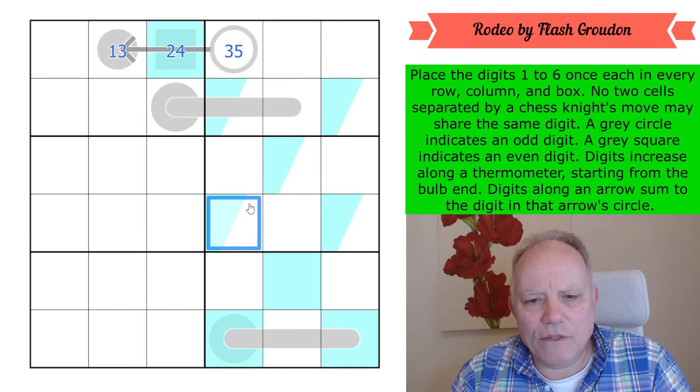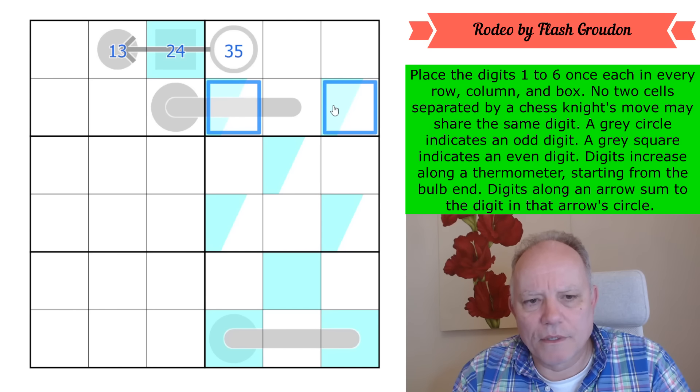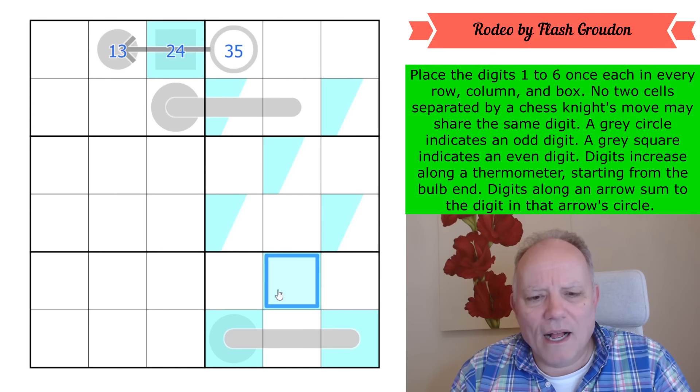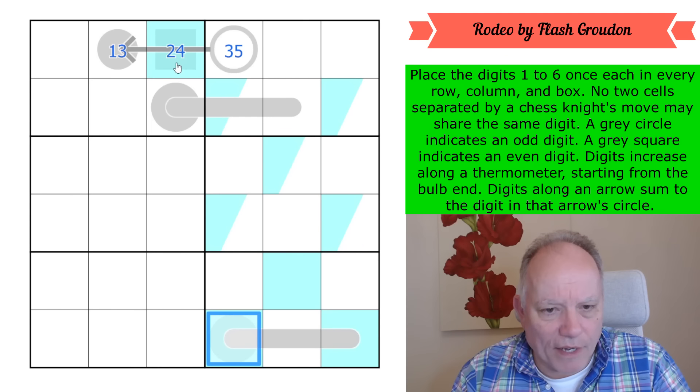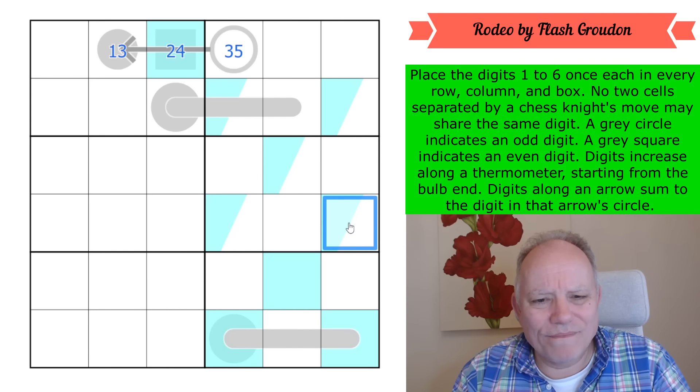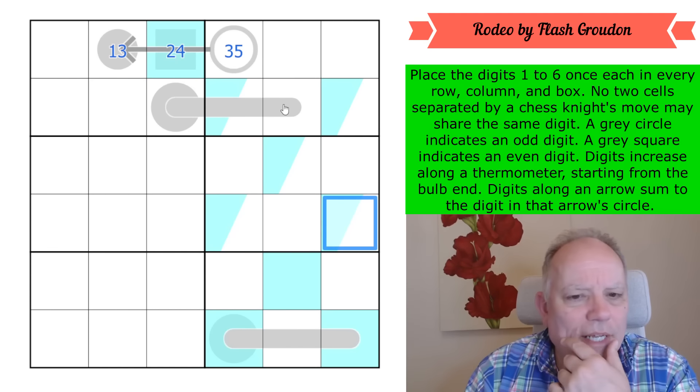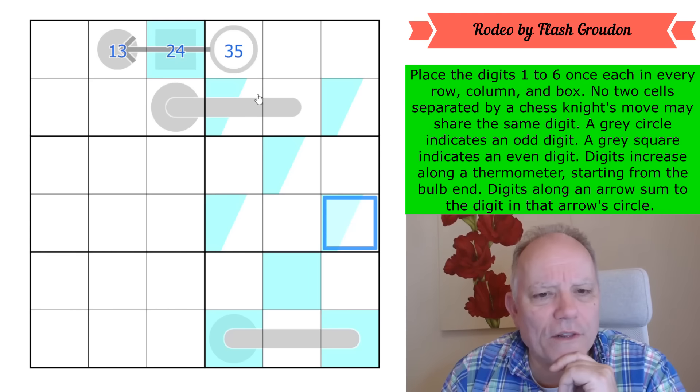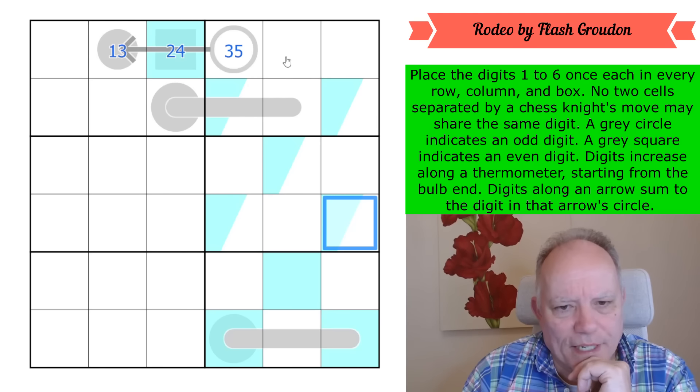Blue would have to be in one of those cells. I don't know at the top, but that's really interesting. Once you get blue into one of those, then I think we're going to find that we can checkerboard the whole grid into three and three.